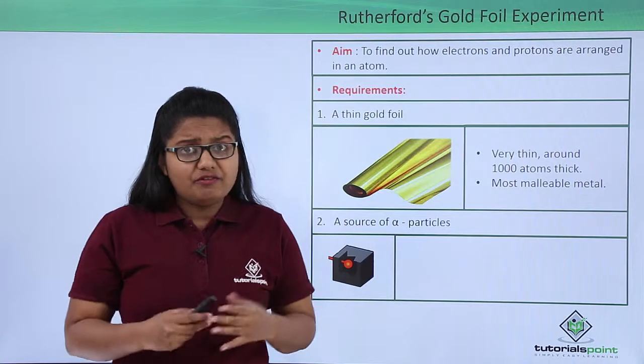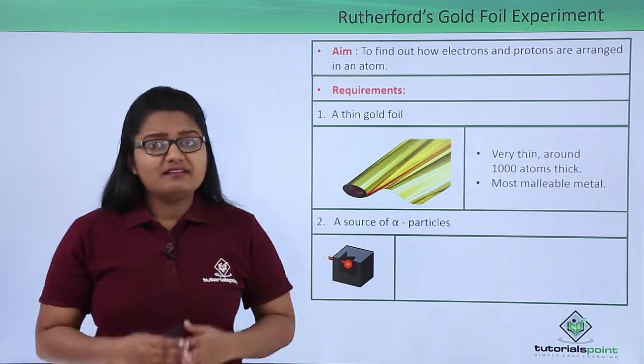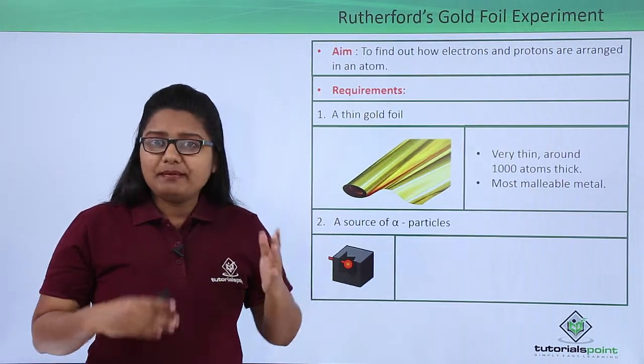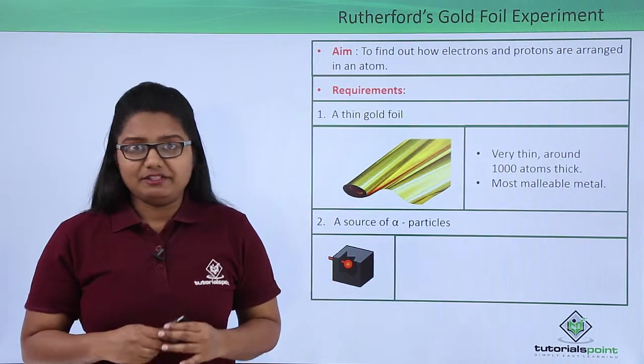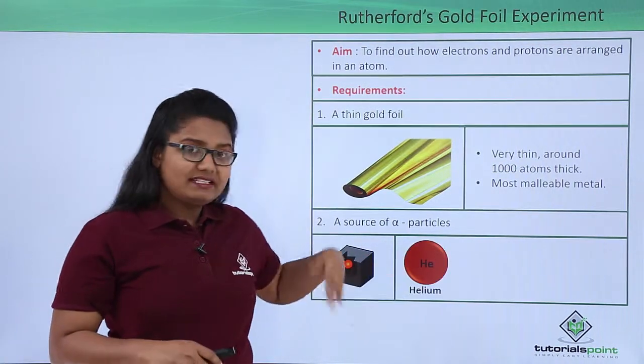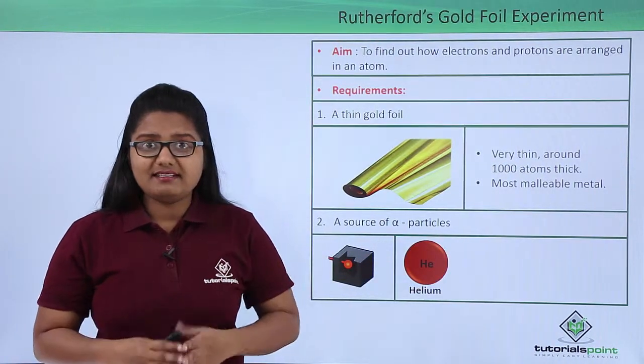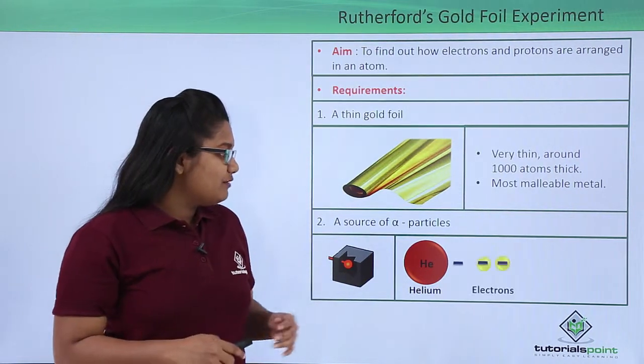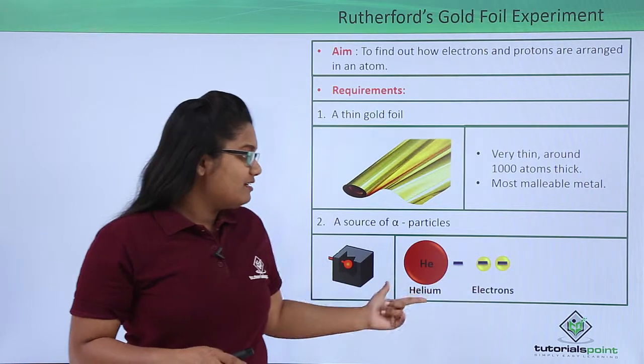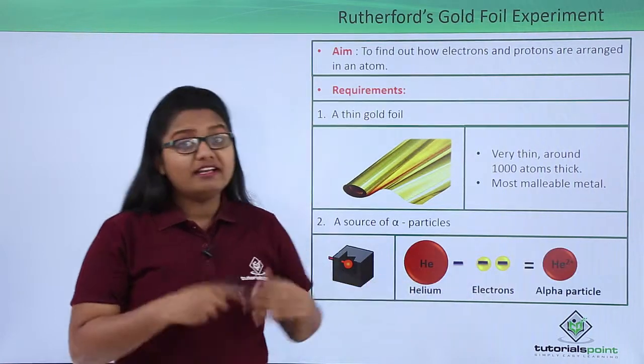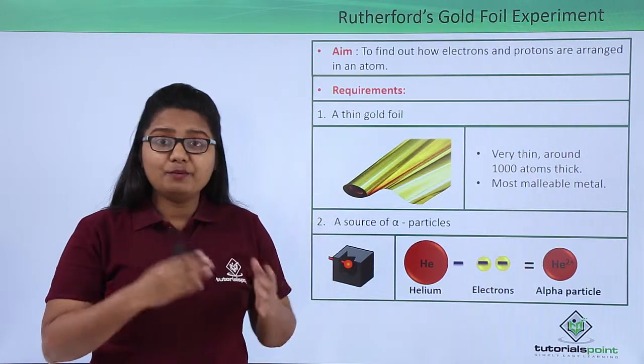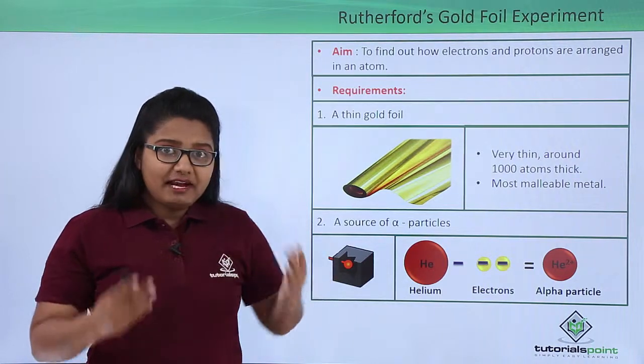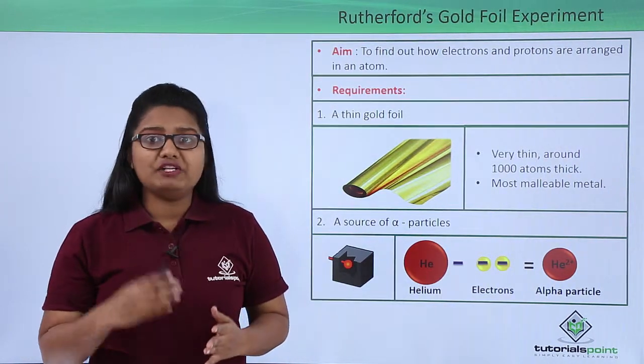Now what are these alpha particles? Alpha particles are basically doubly positively charged helium ions. A helium atom is electrically neutral since it has two electrons and two protons. If we remove two electrons from it, what we are left with is an alpha particle which has two positive charges.